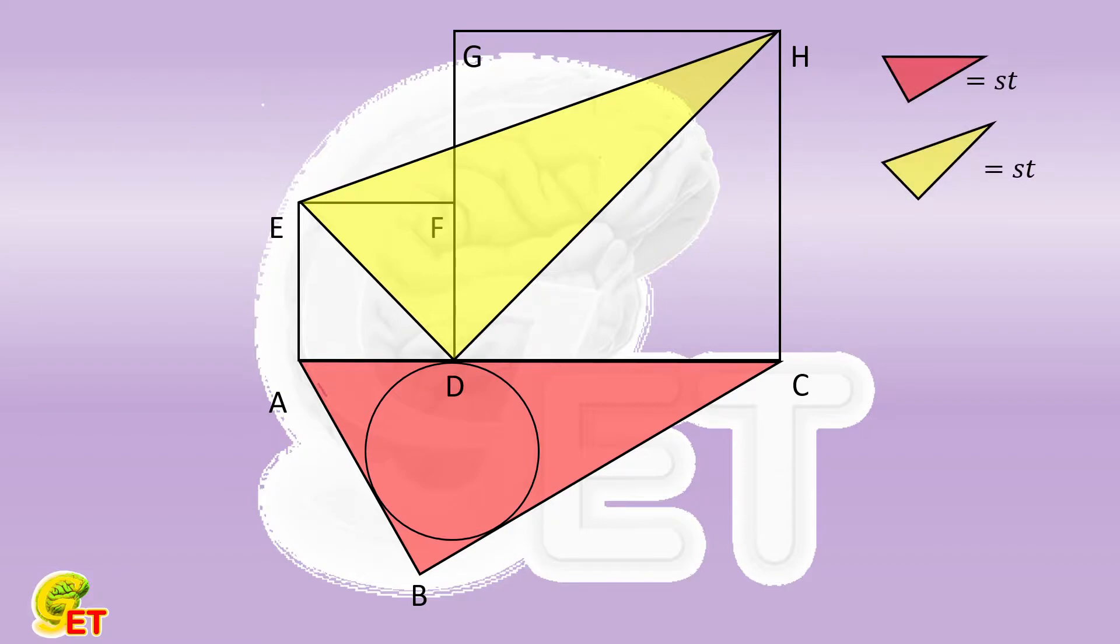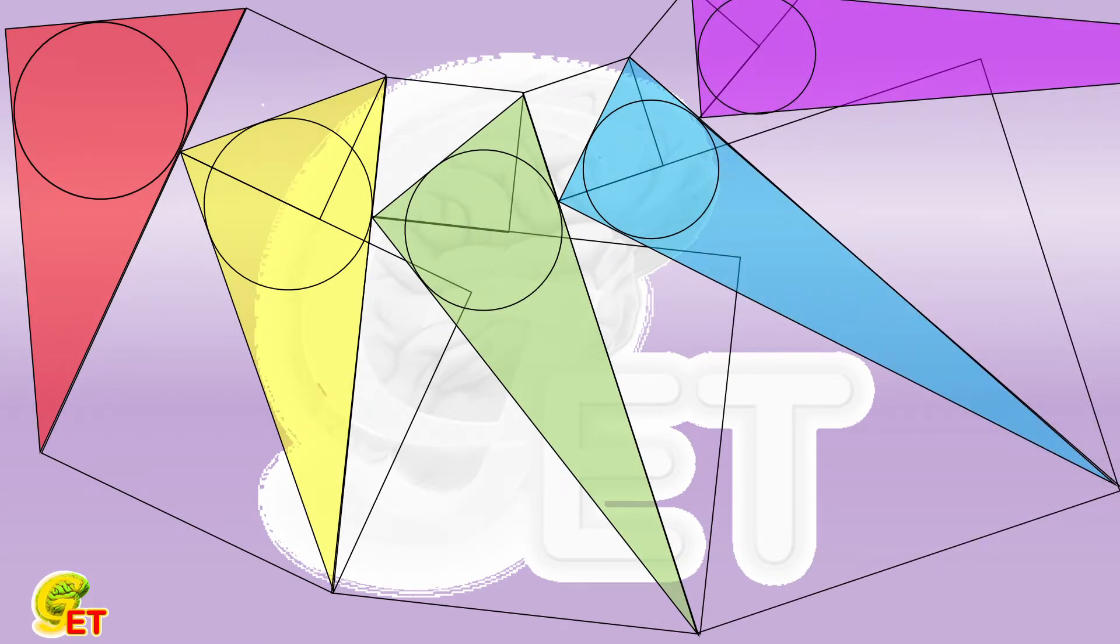If we iterate such operations, we can get a series of triangles and a series of corresponding inscribed circles. We thus know all those triangles have the equal area.